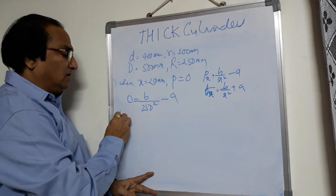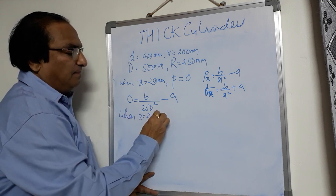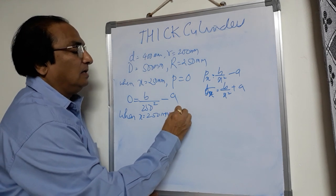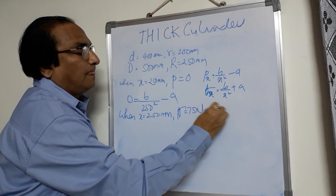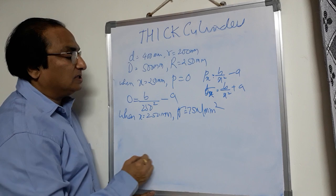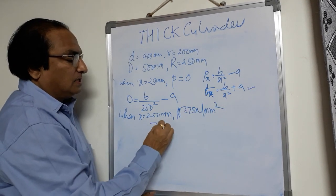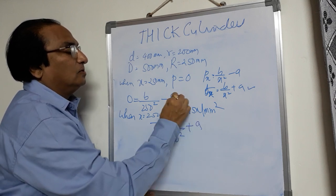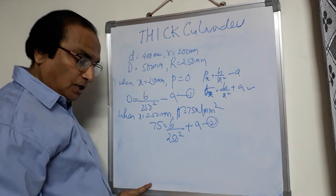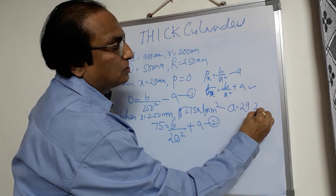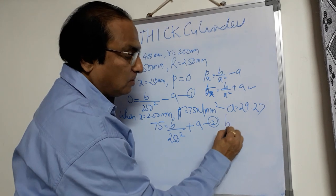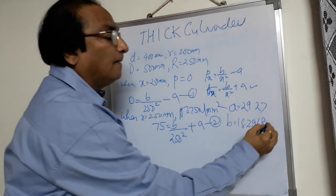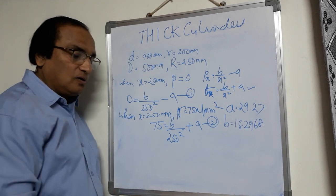Wait — the maximum hoop stress is on the inner face when X = 200 mm, so the second condition is: 75 = B/200² + A. Solving equations 1 and 2, you get A = 29.27 and B = 182,968 approximately. Once A and B are found, we can find the maximum pressure on the inner face and the minimum hoop stress on the outer face.